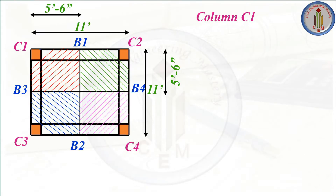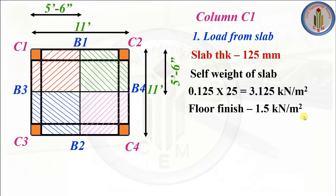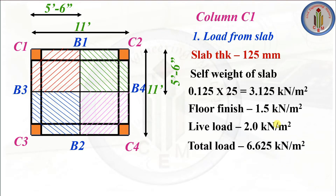First, let's calculate the slab load to columns. The slab thickness is 125 mm. Self-weight of the slab is thickness multiplied by unit weight of RCC, giving 3.125 kN/m². Floor finish is 1.5 kN/m². Live load, for this small residential building, is 2 kN/m². So total load is dead load plus live load, which comes to 6.625 kN/m².